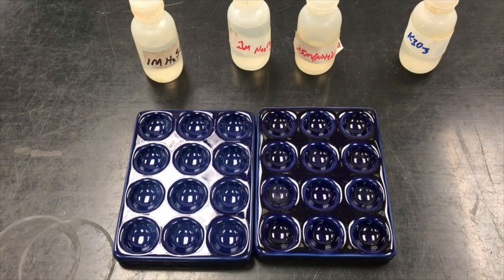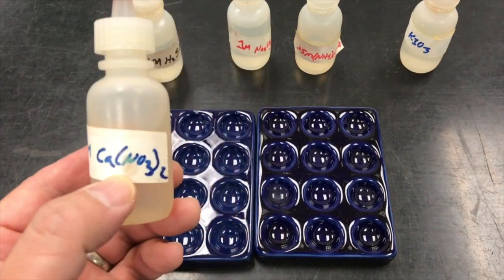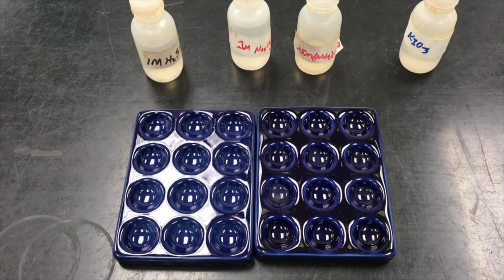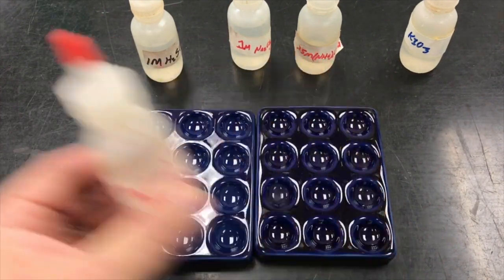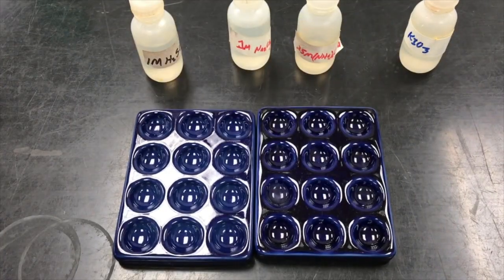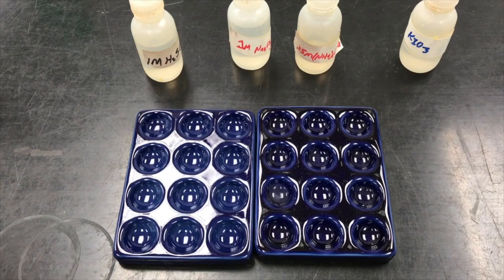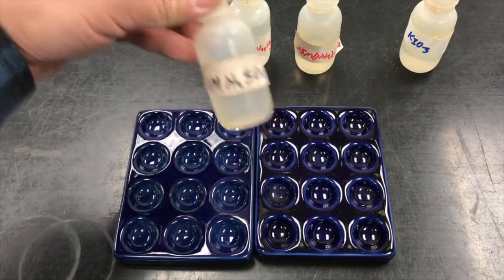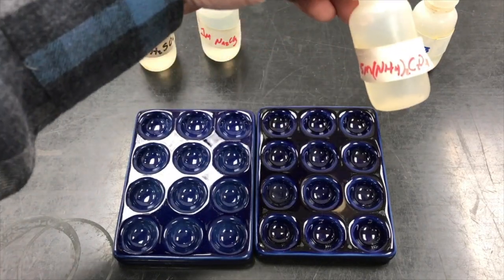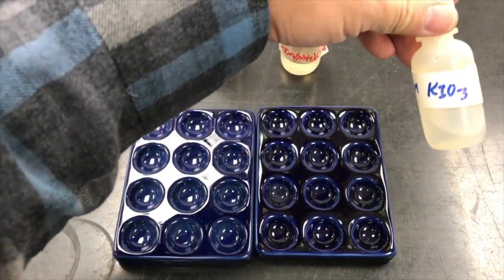We are going to take nitrate salts of the earth metals like calcium nitrate, strontium nitrate, magnesium nitrate, and barium nitrate. And we are going to see if they precipitate with sulfuric acid, sodium carbonate, ammonium oxalate, and potassium iodate.